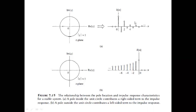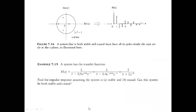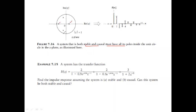The bottom line: if you want a system that is both stable and causal, all the poles must lie inside the unit circle. If poles do not lie inside the unit circle, the system may be causal but not stable, or stable but not causal. Yesterday we discussed this numerical: 1/(1 − α·z⁻¹).